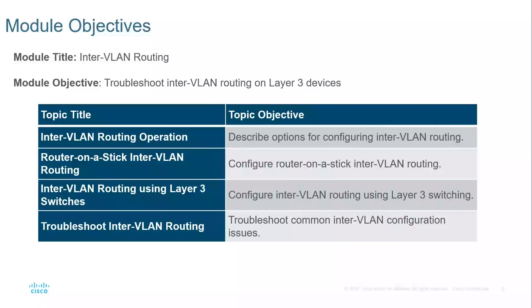We're going to be looking at VLAN communication operations — the ability to have one VLAN communicate with devices on a separate VLAN. We'll look at the process through legacy, router on a stick, and using a layer 3 switch, and then we'll end with troubleshooting.